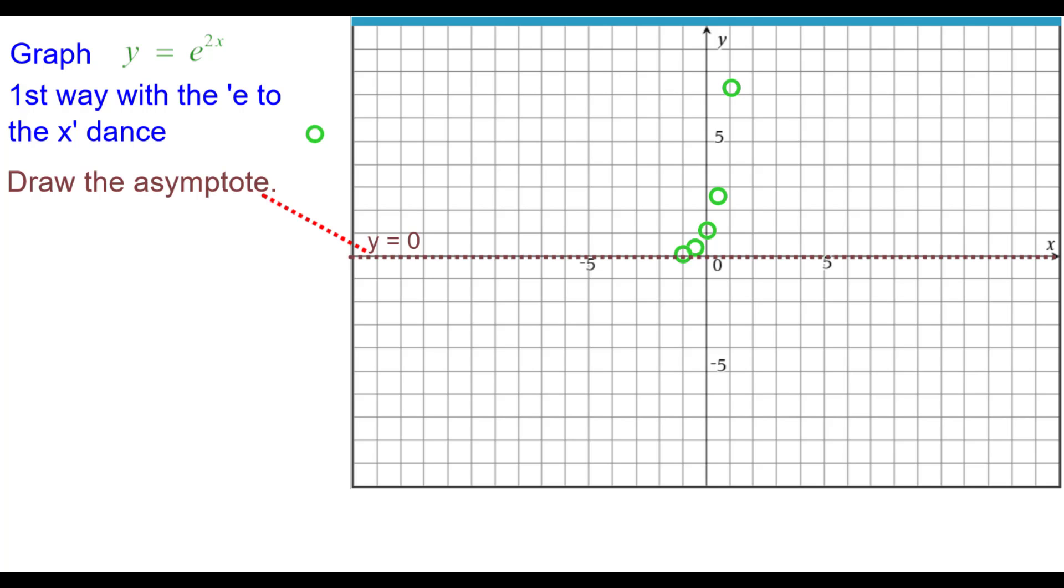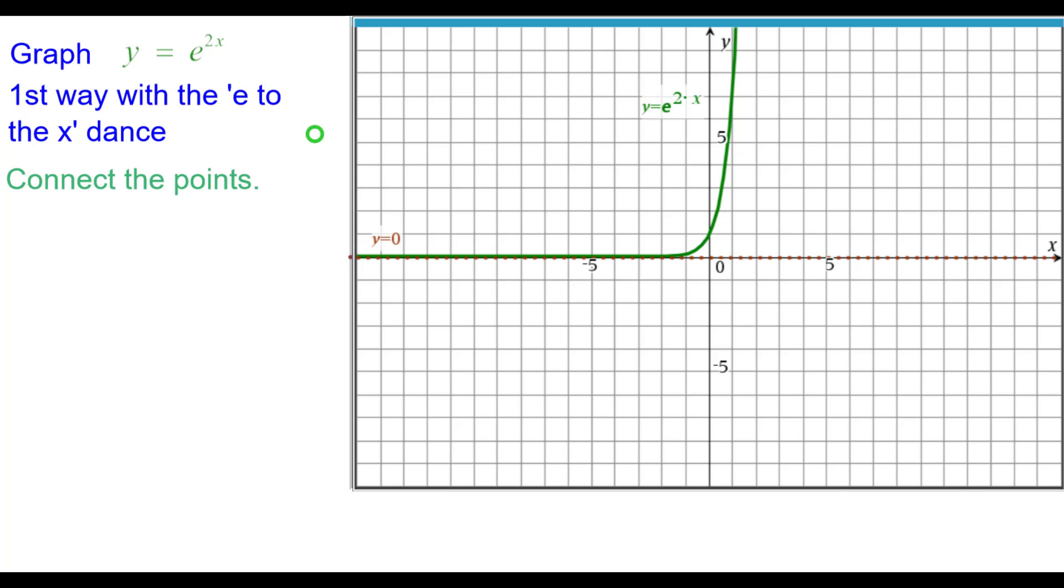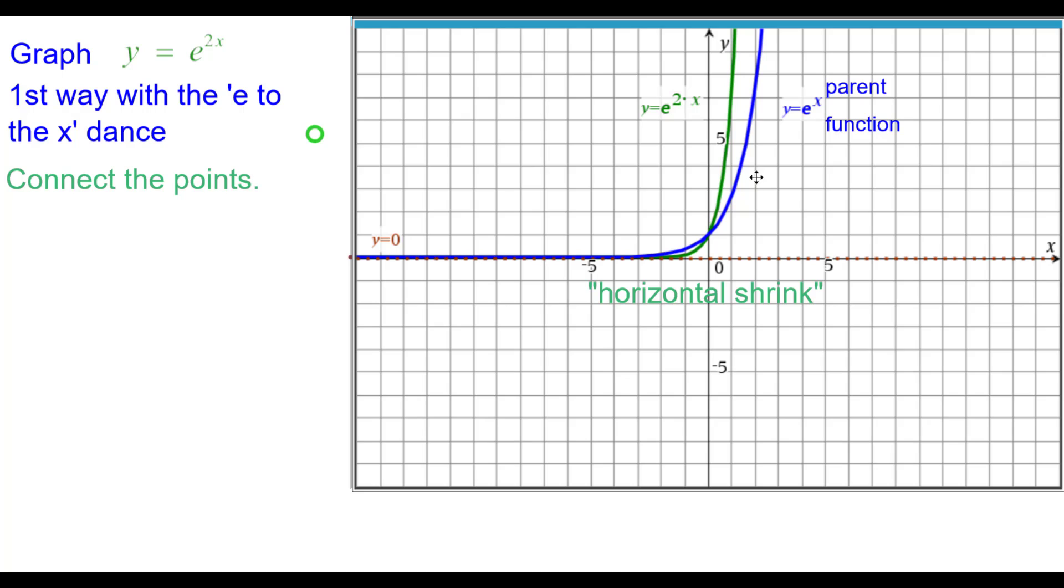Draw the asymptote, which is the x-axis. Connect the points and comparing that to the parent function, you can see that from blue to green it is a horizontal shrink.